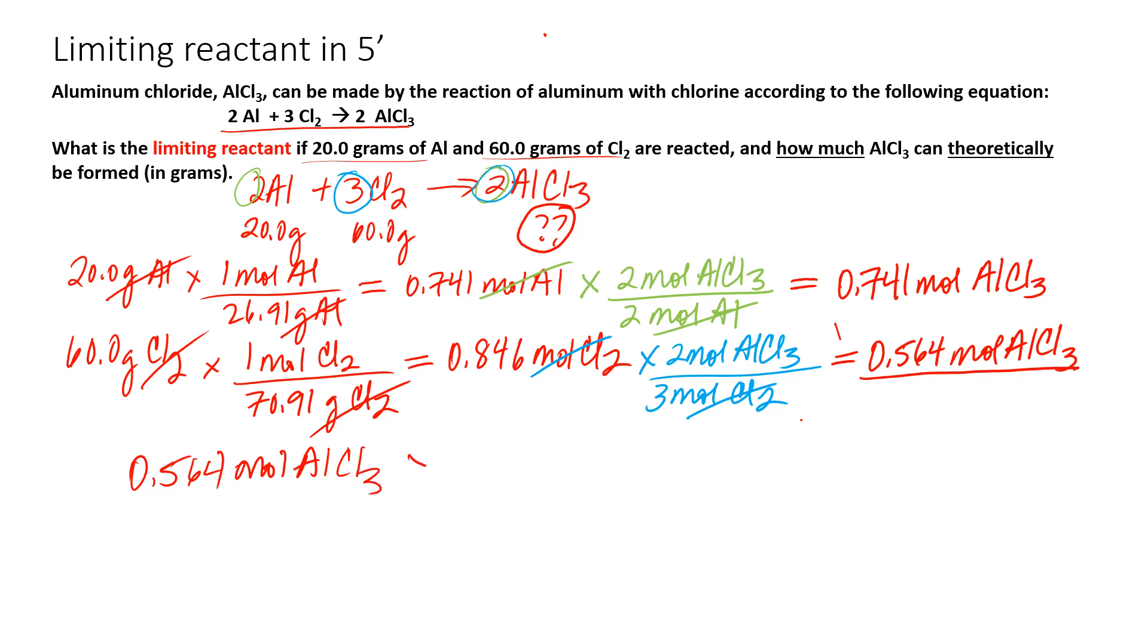AlCl3. And we multiply by the molar mass of AlCl3. This happens to be 133.34 grams of AlCl3 per mole of AlCl3. And we end up with 75.2 grams of AlCl3. That took five minutes and 15 seconds, but close enough.